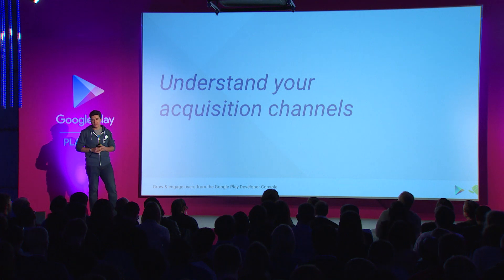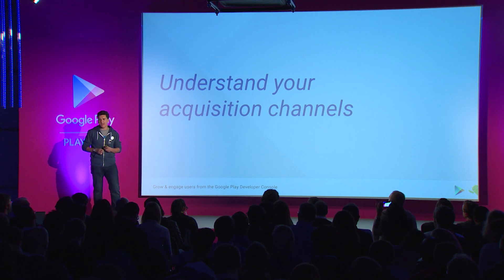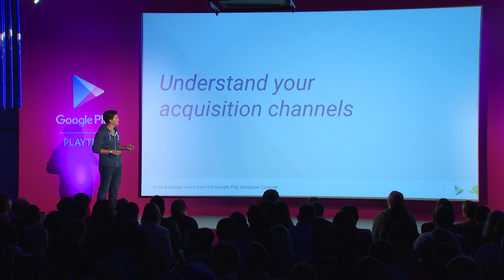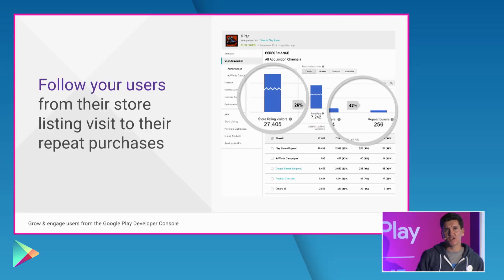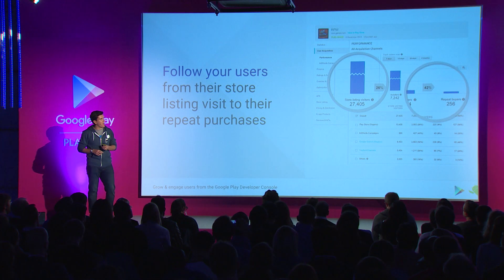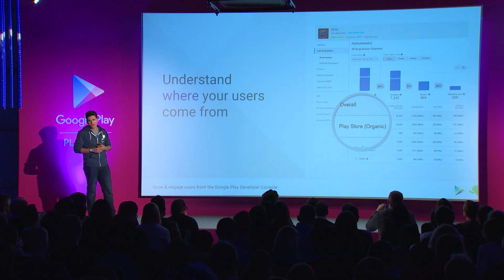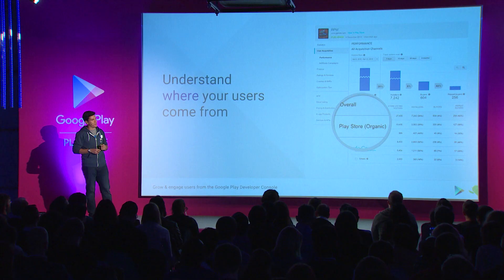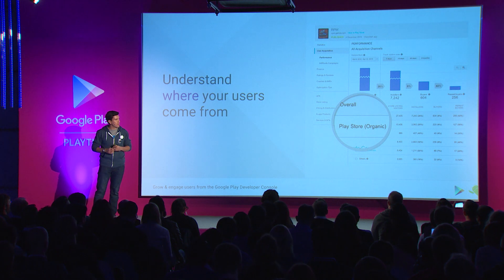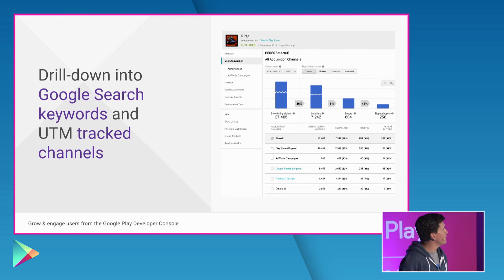At I/O, we announced a new report that will give you a better understanding of your acquisition channels and where your users are coming from. If you've ever wondered how many users are looking at your store listing, this report will give you an answer. You'll be able to track a cohort of users who visited your store listing page, what percentage of them went on to install your app, and eventually went on to become in-app purchases. In addition to a funnel that shows how your users progress through the store, it will also give you a breakdown by acquisition channel. You'll now know what percentage of your traffic is coming organically through the Play Store versus other channels, whether that's AdWords, Google Search, or your UTM tag traffic, or other third parties.